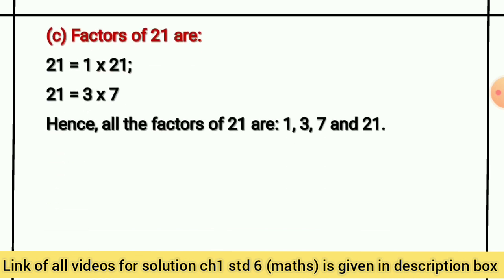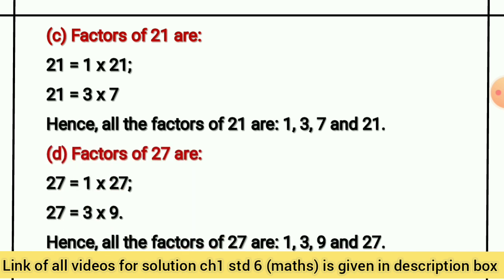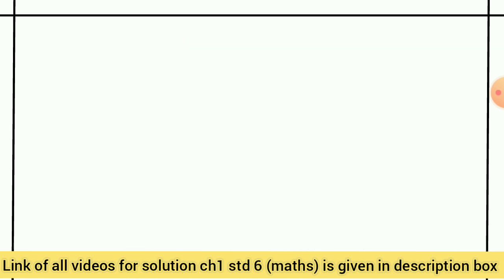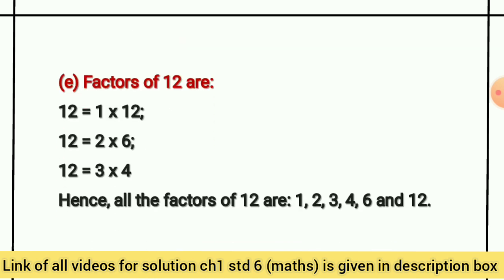Factors of 21 — 21 के factors। Factors of 27। Factors of 12 — यानि कि 12 के factors।